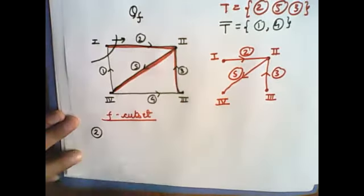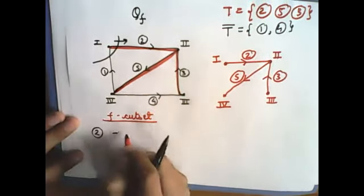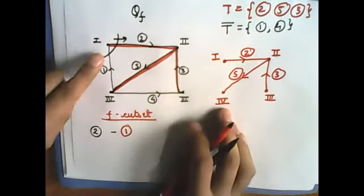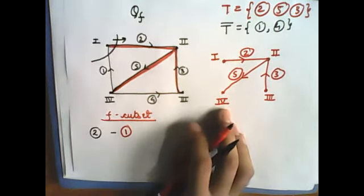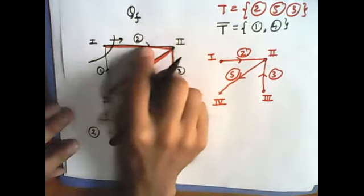2 ka direction aise hai, so 2 ke saath mein bas ek minus 1 aur aa jaye. So here the number of components increases by 1, so this is the cut set for branch 2.